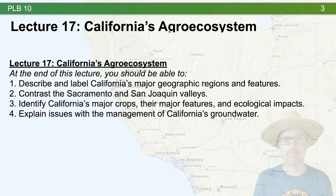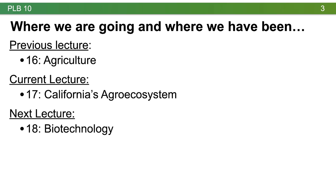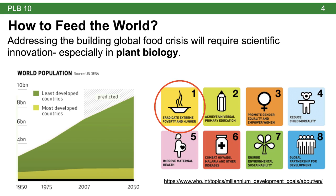In our previous lecture, we talked about the history and origins of agriculture. In this lecture, we'll talk about California's agro ecosystem, and then we'll move on to biotechnology. One of the questions I left off with in the last lecture was how to feed the world. I would argue that addressing the building global food crisis will require scientific innovation, especially in plant biology.